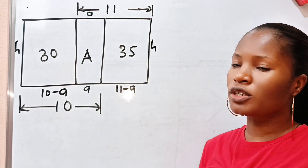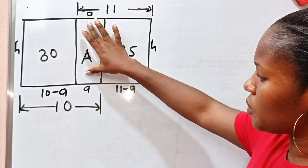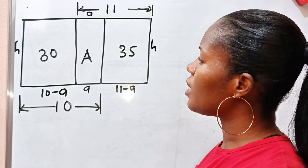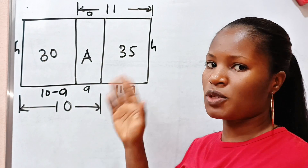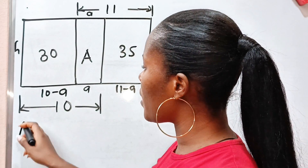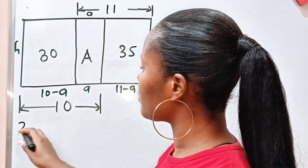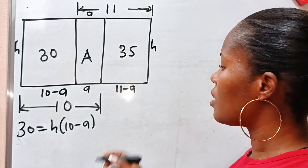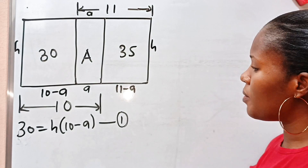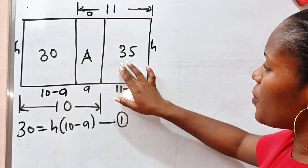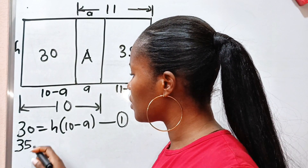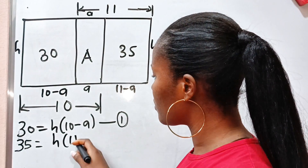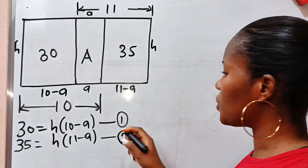Now, let us form equations that we are going to use to find the area of this portion. Concentrating on the first section, remember that the area of a rectangle is length times breadth. So the area of this section, which is 30, is equal to h times (10 minus a) — let's call this equation 1. Similarly, the area which is 35 is equal to h times (11 minus a) — let's call this equation 2.